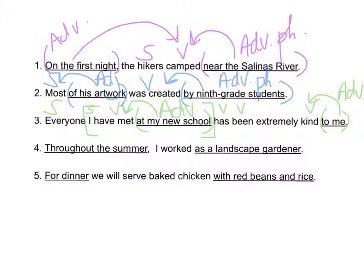'Throughout the summer I worked as a landscape gardener.' We don't have a lot to work with. 'I worked' — subject and verb. 'As a landscape gardener' — I'm working as a landscape gardener, so it's modifying the verb: adverbial. 'Throughout the summer' — worked throughout the summer, so this is also adverbial.